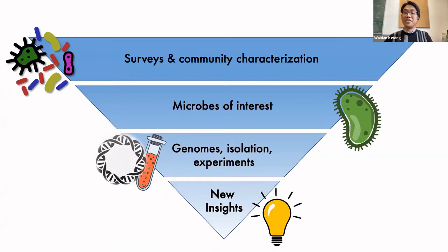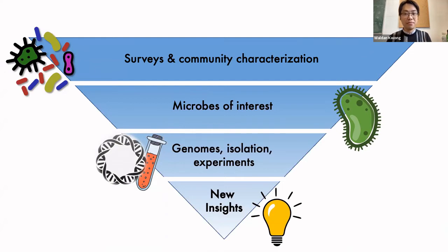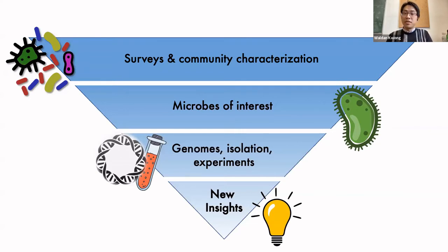To answer these questions, I find value in using what I call an inverted pyramid approach — starting broad, then drilling down to uncover novel insights. We first leverage the power of high-throughput methods and surveys to understand and characterize microbial communities. Then we narrow this down by identifying particular microbes of interest — perhaps something phylogenetically novel, something abundant in certain conditions, or simply something that we can culture. We can then sequence their genomes and perform experimental manipulation to ultimately reveal new insights.